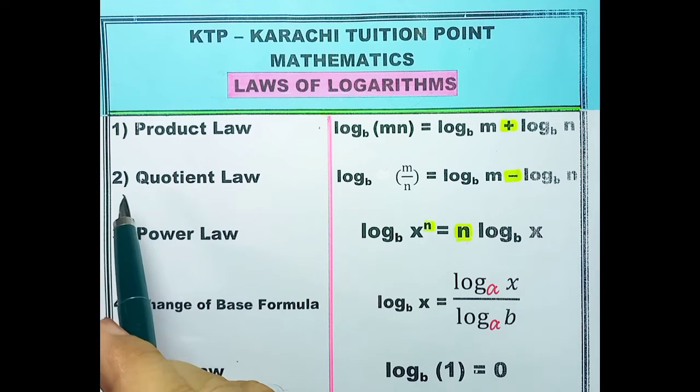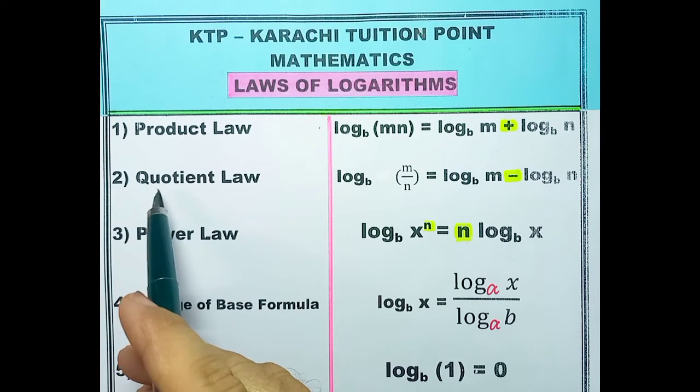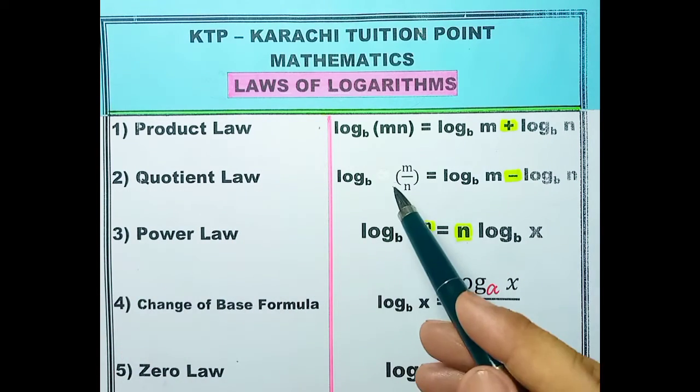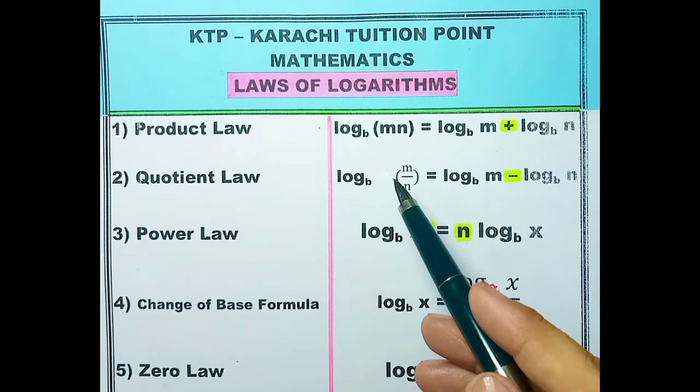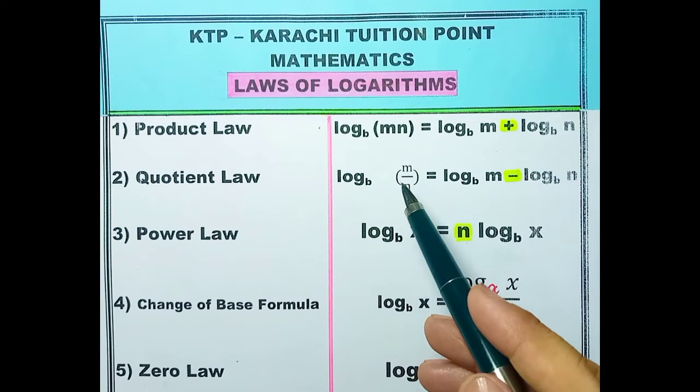Now, let's go for law number 2 Quotient law. When a number is divided by another, the result is called quotient.